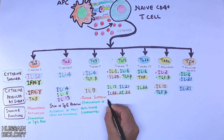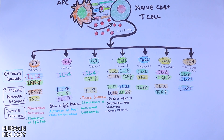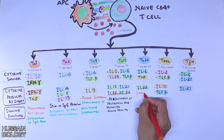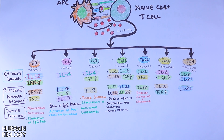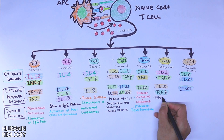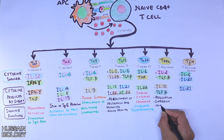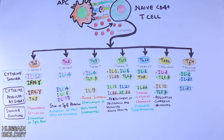TH9 plays a role in tumor suppression and stimulation of anti-tumor lymphocytes. TH17 plays a role in the recruitment of neutrophils and monocytes, and also aids in wound healing. TH22 induces cytokine and chemokine production and stimulates tissue remodeling.